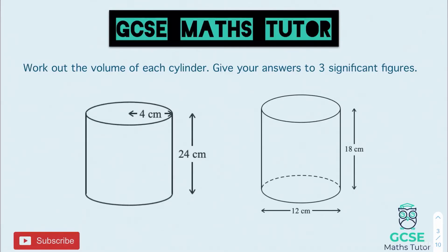For the first question, we need to do the area of the circle. The radius is 4, so we're going to do pi times 4 squared. Rather than writing that answer down separately, I'm just straight away going to multiply by the height of 24. So pi times 4 squared times 24 comes out as 384 pi, or 1206.